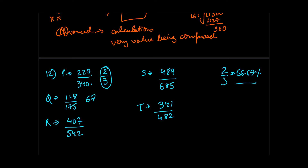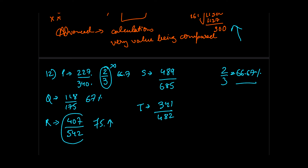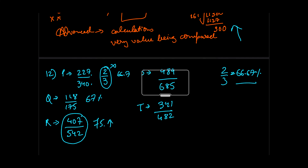For school R: 407 out of 542 — the numerator is large relative to the denominator, suggesting a bigger fraction. Dividing 407/542 gives 75-point-something percent. That's a strong candidate. The moment you feel comfortable dividing, it becomes manageable.